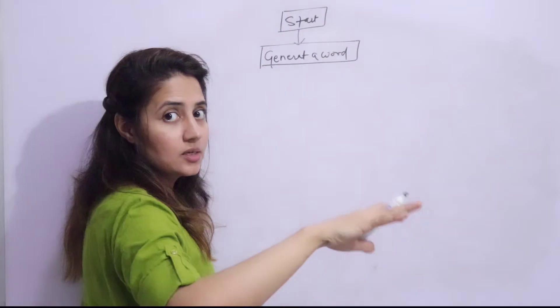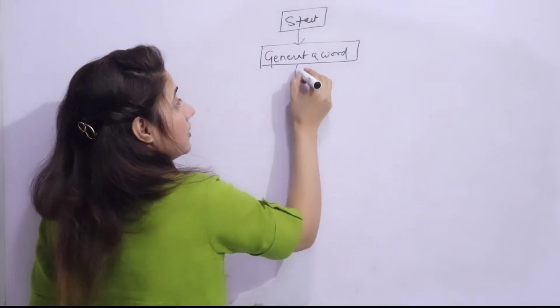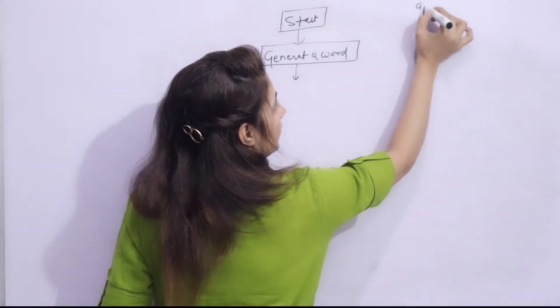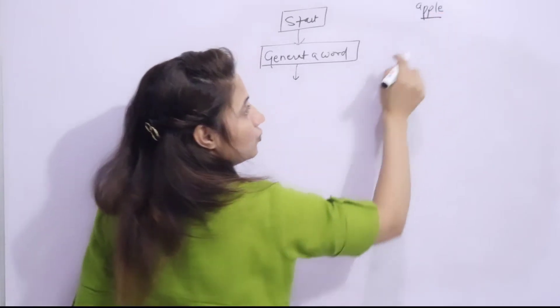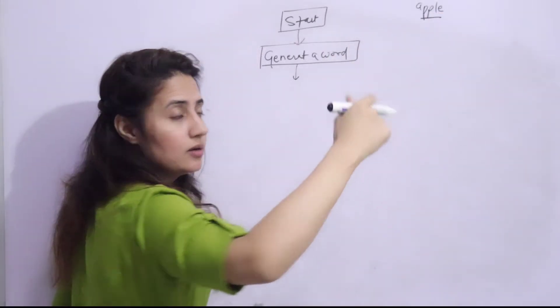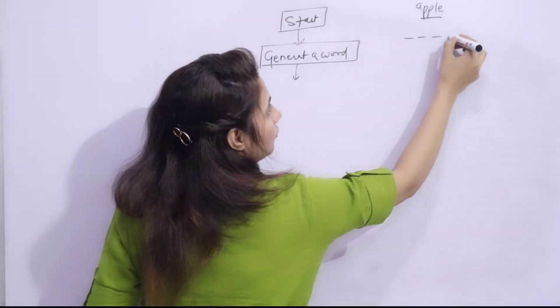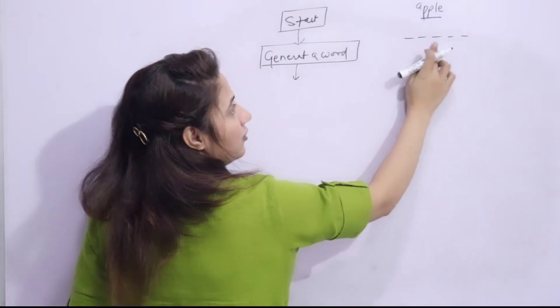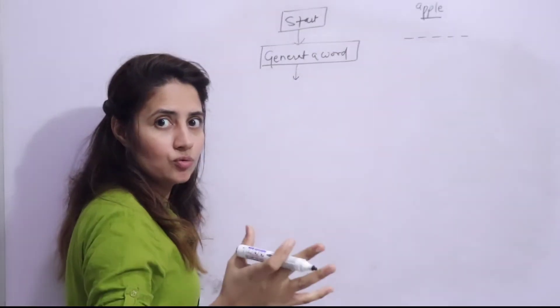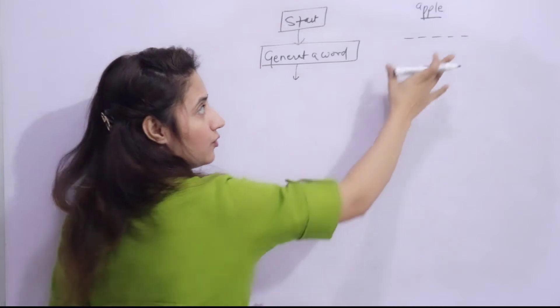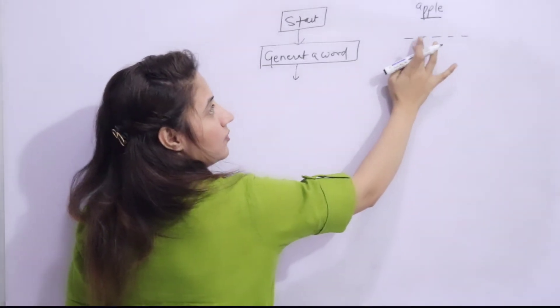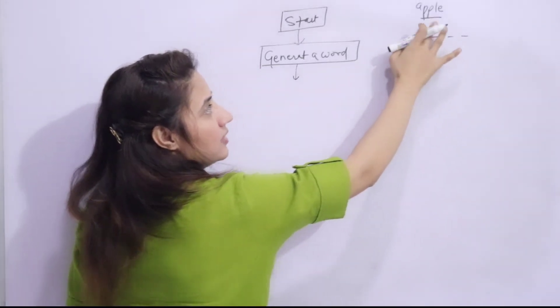Now obviously in the last example we have seen 'apple'. We have generated apple because this would not be shown to the second player. One, two, three, four, five - these five blank spaces would be shown only because there are five letters. So you have to generate as many blanks as the letters in that word.